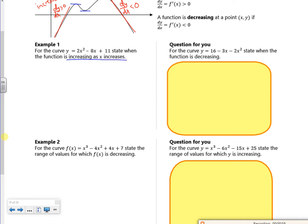So if I differentiate it, dy by dx is 4x minus 8. I'm looking when it's increasing, when dy by dx is greater than zero. That statement is really important. We must do that statement.